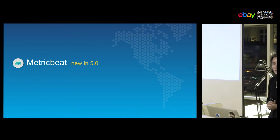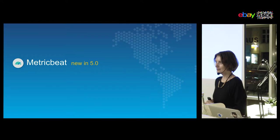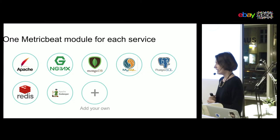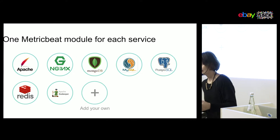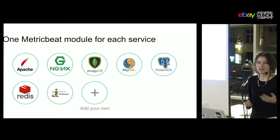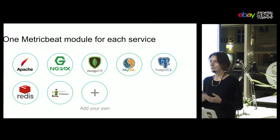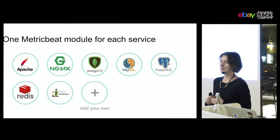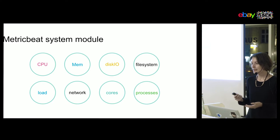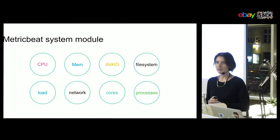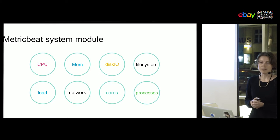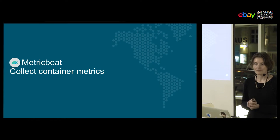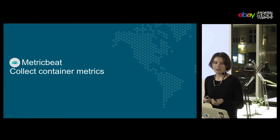Now let's talk about Metricbeat, a new Beat released with version 5.0. Metricbeat periodically fetches metrics from different services and sends them to Elasticsearch. It has support for Apache, NGINX, MongoDB, MySQL, PostgreSQL, Redis, and Apache Zookeeper, and you can add support for additional services by adding a module. Metricbeat also comes with a system module providing CPU, memory, disk IO, filesystem, load, network, per-process, and per-CPU core information.